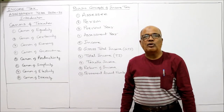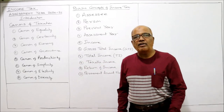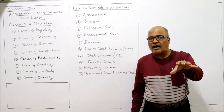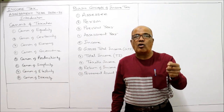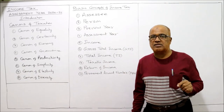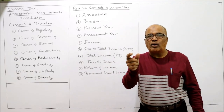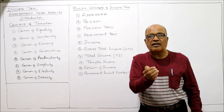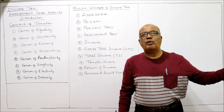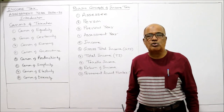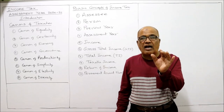The next canon is the canon of convenience. The tax should be applied at a time when the assessee has the money — unnecessary burden or wrong timing should not be imposed. For example, a person receiving salary should have TDS deducted at the time of salary itself. Similarly, a person selling goods should pay tax at the time of sale. Taxes should be convenient and should not cause inconvenience to the payer.